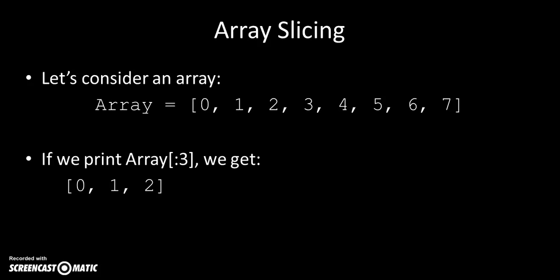If I say colon 3, it prints out the first three elements of the array, which are 0, 1, and 2. And the end, it stops at end minus 1, so it's just the first three.